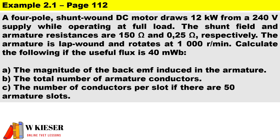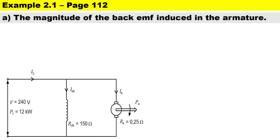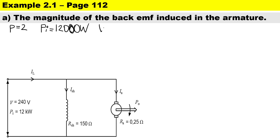Calculate the magnitude of the back EMF induced in the armature. First, let's note all the given information. This is a four-pole machine, so we have two pairs of poles. The motor draws 12 kilowatts — that is 12,000 watts input power. Remember that a motor is electrical in and mechanical out. The supply voltage is 240 volts.